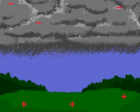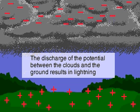Thunderclouds generally develop a high negative charge at their base, while the ground is positive relative to the cloud. When this large potential difference is discharged, the result is lightning.